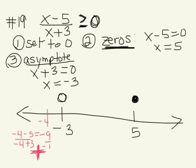Then I need to test the value in between negative 3 and 5. So let's test 0. So 0 minus 5 gives us negative 5, and 0 plus 3 gives us 3. So a negative divided by a positive is a negative, so anything in between negative 3 and 5 is a negative.